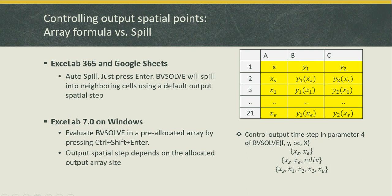One important thing to keep in mind, though, is the spill feature is only available in ExcelLab 365 and Google Sheets. If you are running ExcelLab 7 on Windows, unfortunately, the spill feature is not available. And the only way you can run BVSOLVE is as an array formula in a pre-allocated output array by pressing Ctrl+Shift+Enter. However, these controls for the desired number of output points apply exactly the same way, whether you are in ExcelLab 365 or ExcelLab 7. The difference is the way you would run BVSOLVE. One other difference is if you are in ExcelLab 7, there is no default size for the solution. It really depends on the size of the allocated array that you have chosen. If you choose too big of an array, it will give you more resolution. If you choose too small of an array, it will give you a coarser resolution.